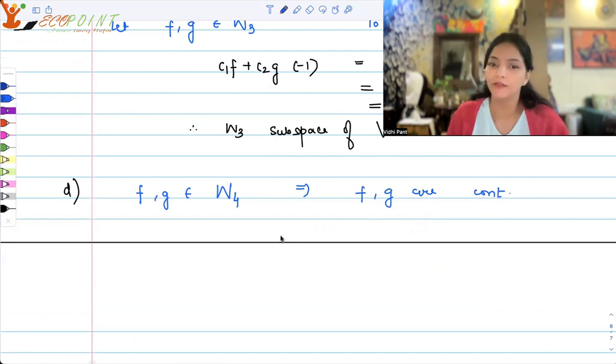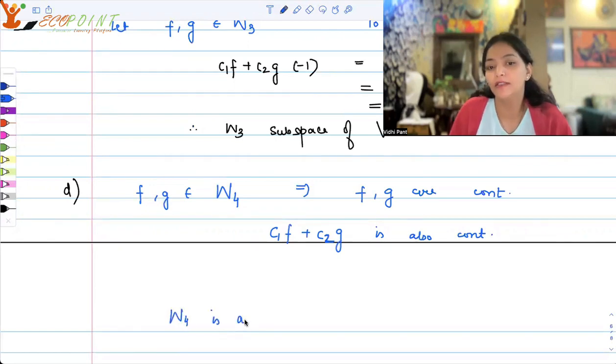If you have two continuous functions and you take a linear combination of those, is there any chance that it will not be continuous? Absolutely not. In case f and g are continuous, c₁f plus c₂g is definitely continuous. So your property that you require of a subspace is automatically getting satisfied. Therefore, W₄ is a subspace of V.